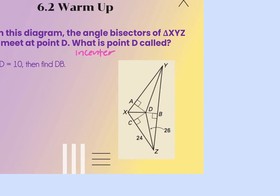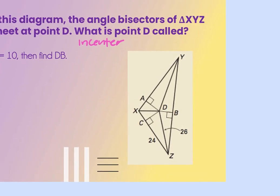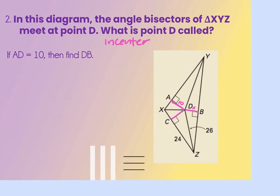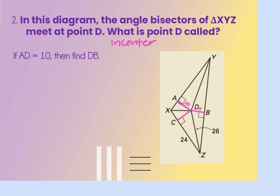The incenter theorem says that from the incenter to each side is congruent. So each of these segments that have right angle markings showing the distance would be congruent. If AD is 10, you're trying to find BD, which would also be 10. Because the angle bisectors meet at point D, that's the incenter, and from the incenter to the sides are congruent.